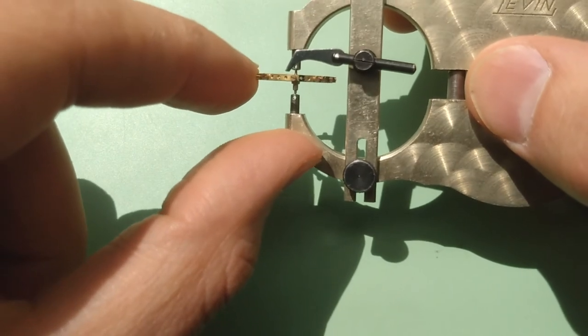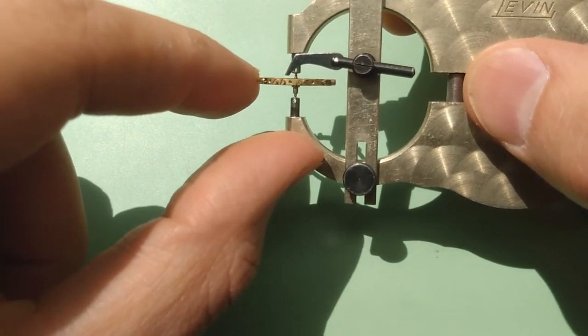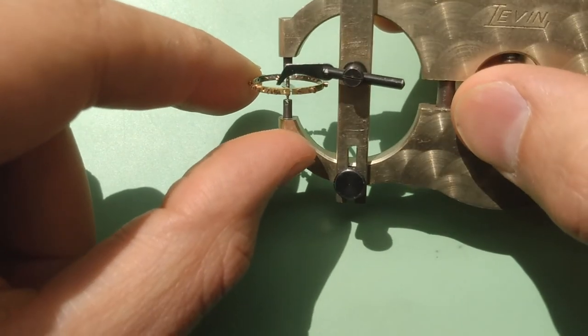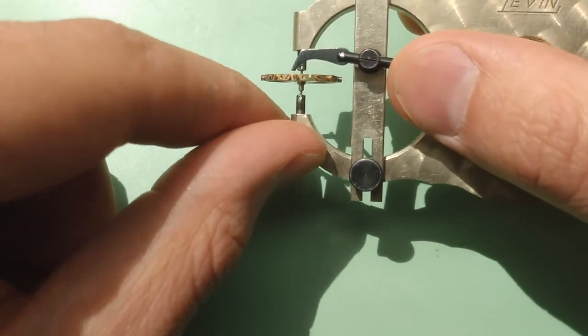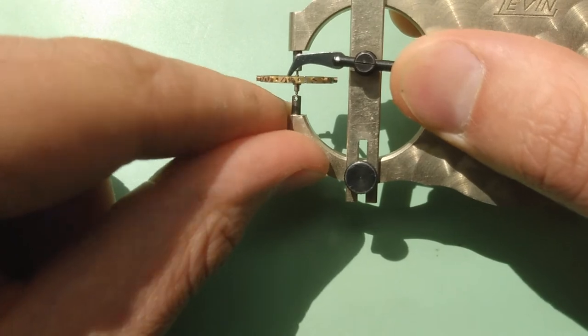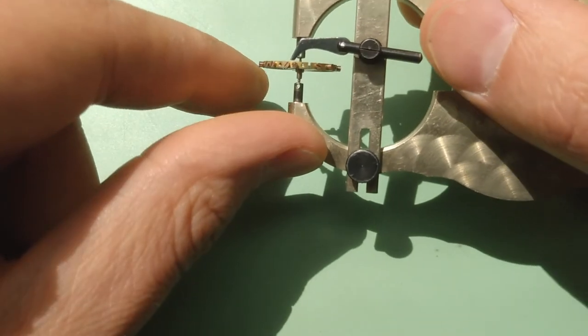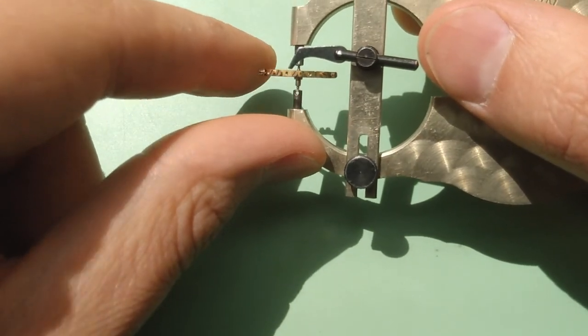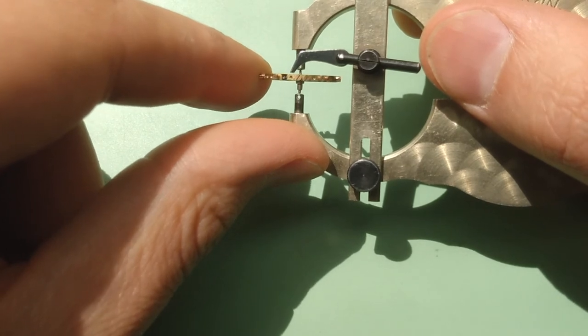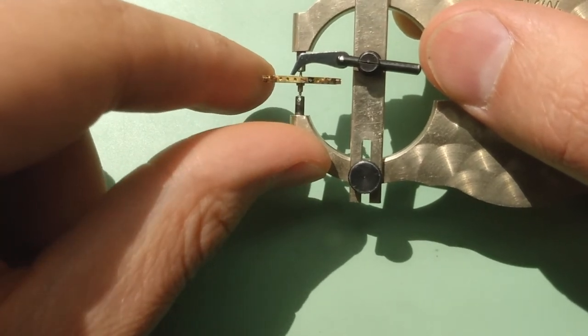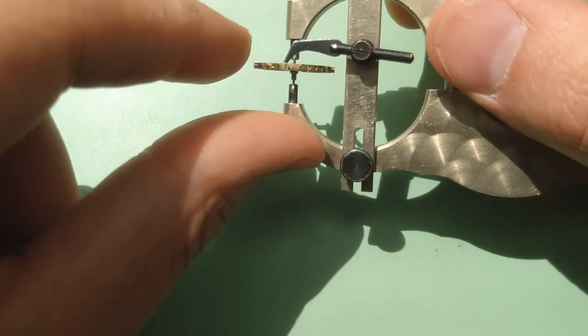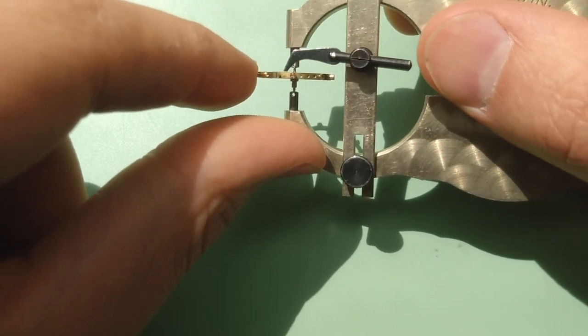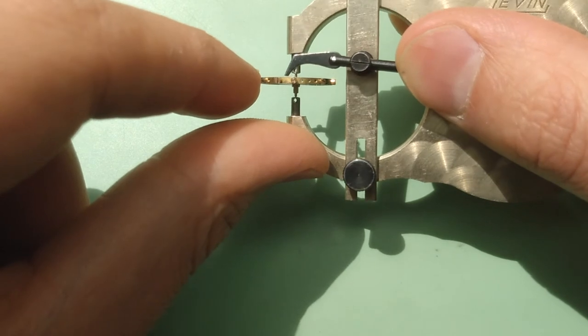And then we can come back and check the trueness of this half of the balance wheel. So let's look at the gap between index and balance. There we go. That's quite a bit better, quite a bit better. We don't see that sagging anymore. So that's good.